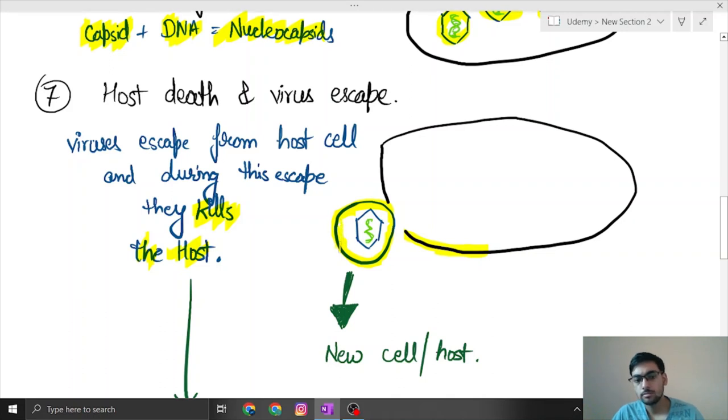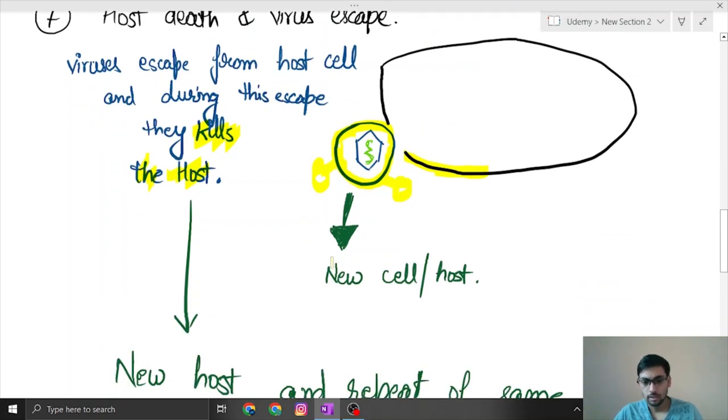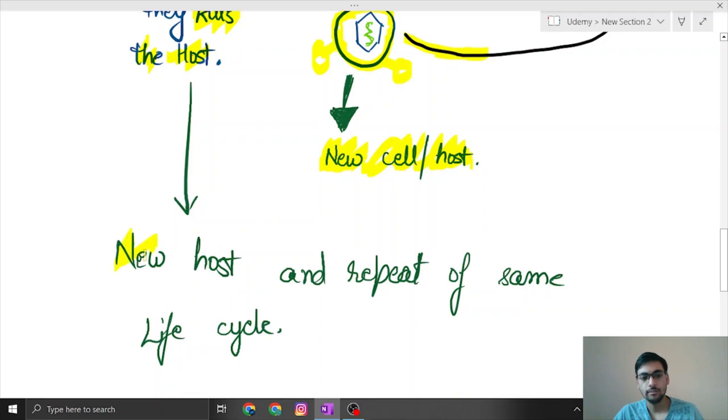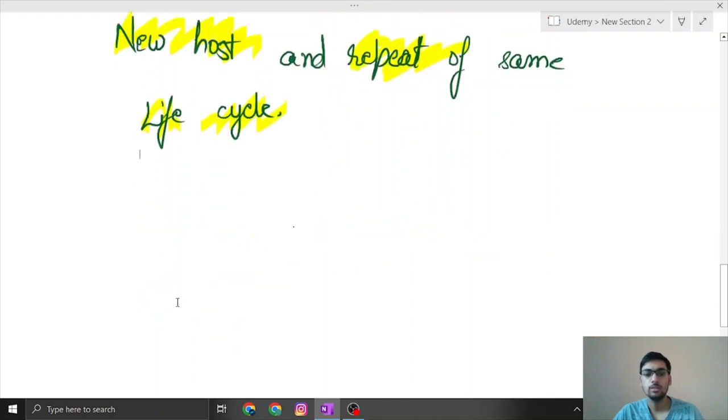In those modifications they will get enveloped and it will help further in its protection. And then it will affect new host. When it affects the new host this life cycle is repeated. That's how it infects another.